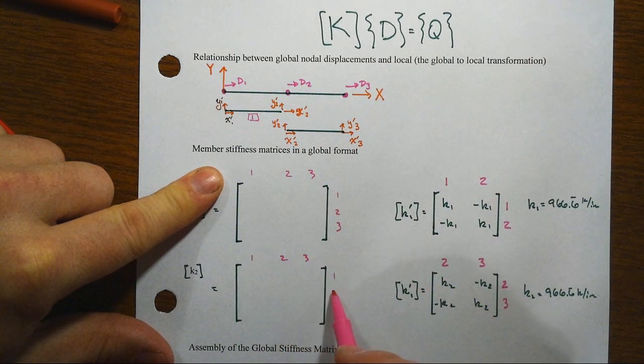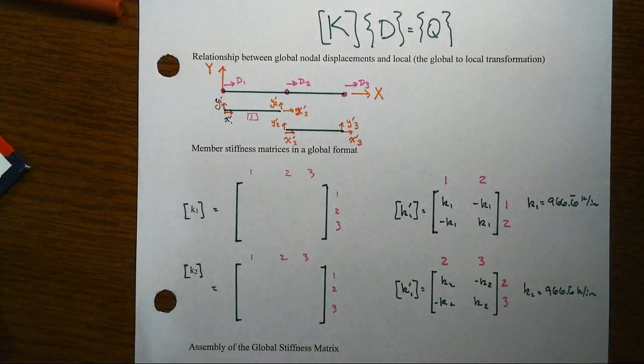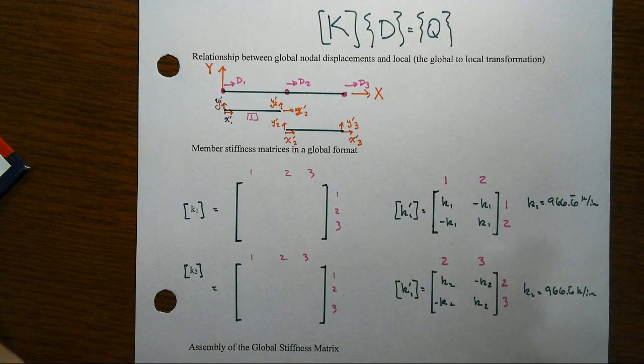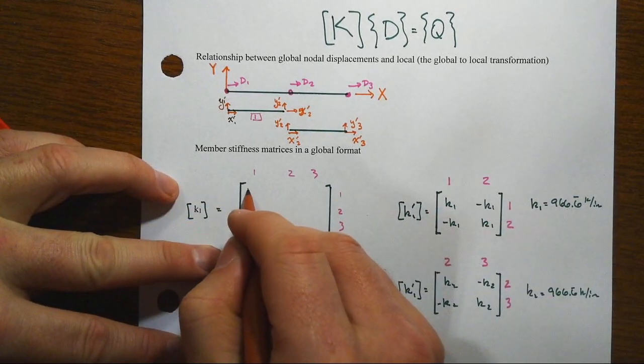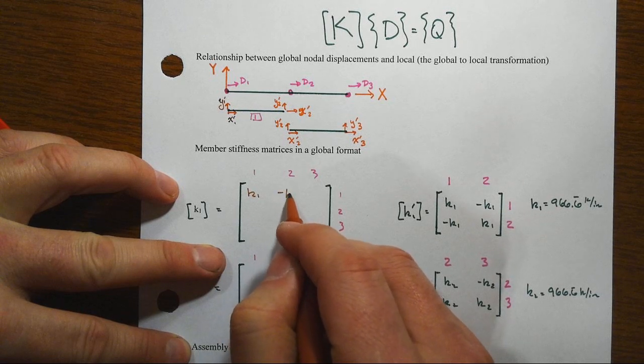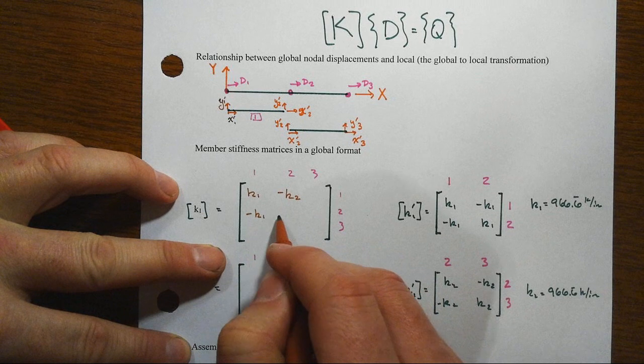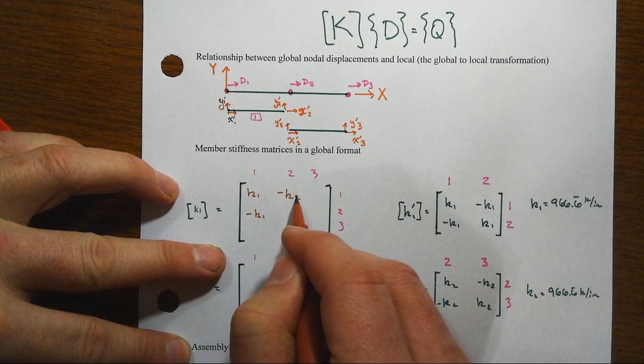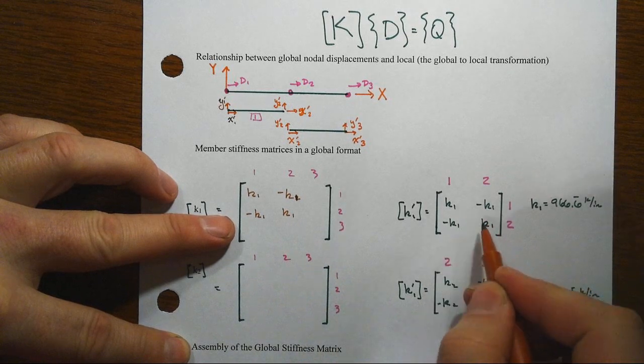And so all we're going to do is transform, take this and pull it over into this global format. All right, so one-one will line up right here at K1, and then we've got K2, and because of how, oops it's not K2, that's still K1, and then that becomes K1. Yep, those are the same, K1s at those are all K1s.